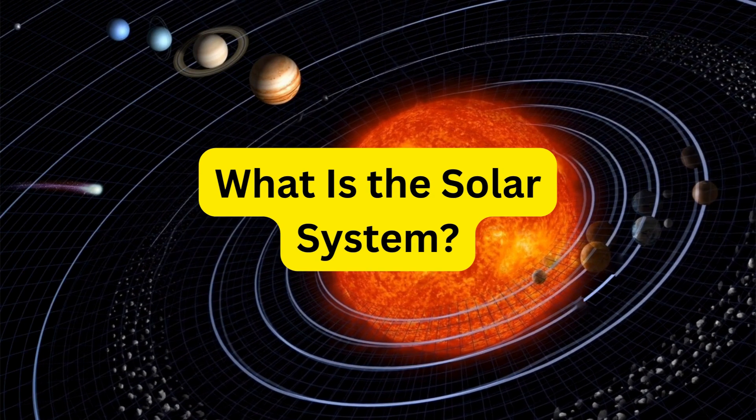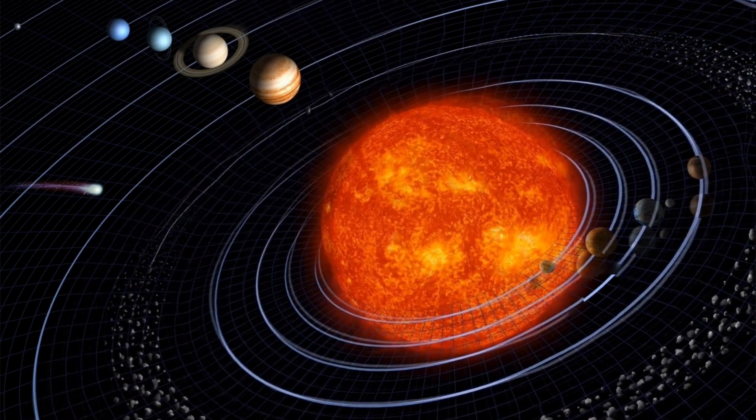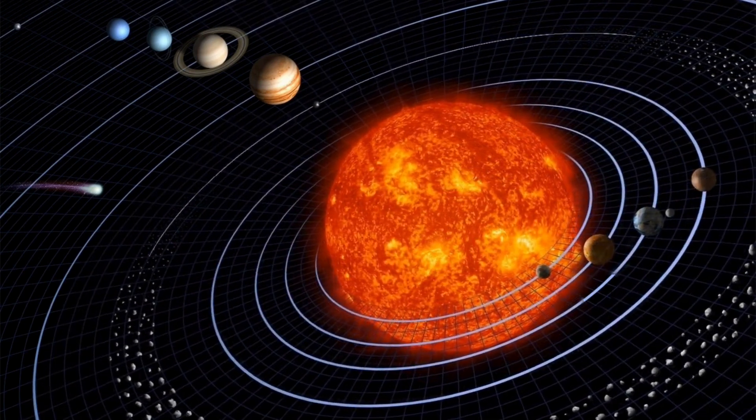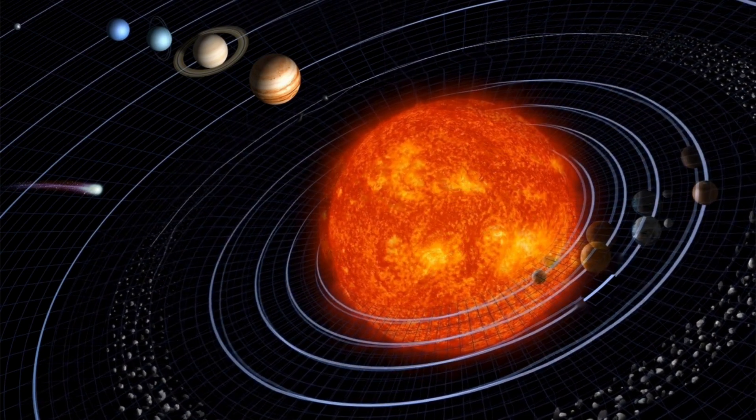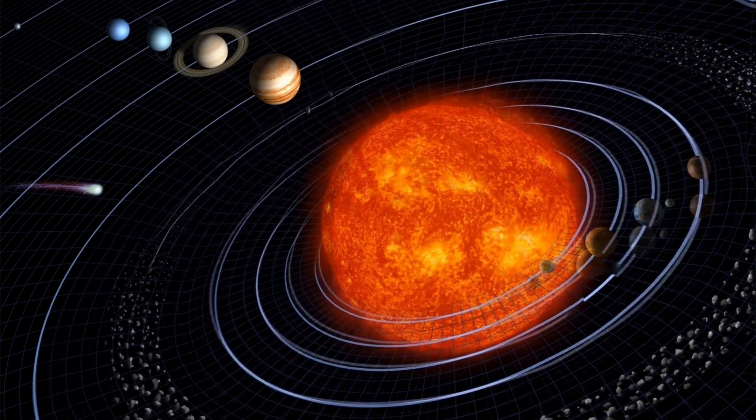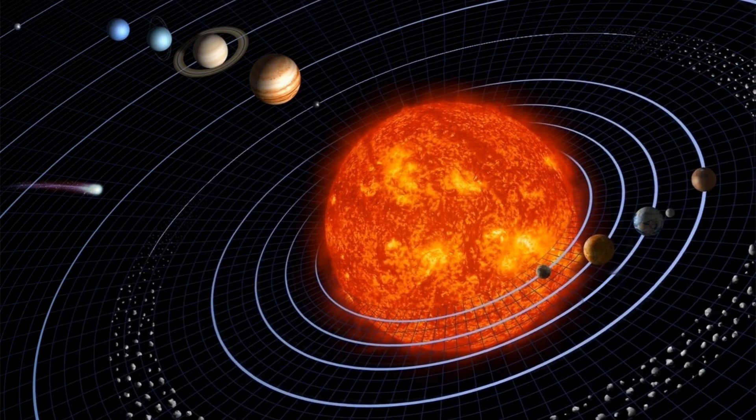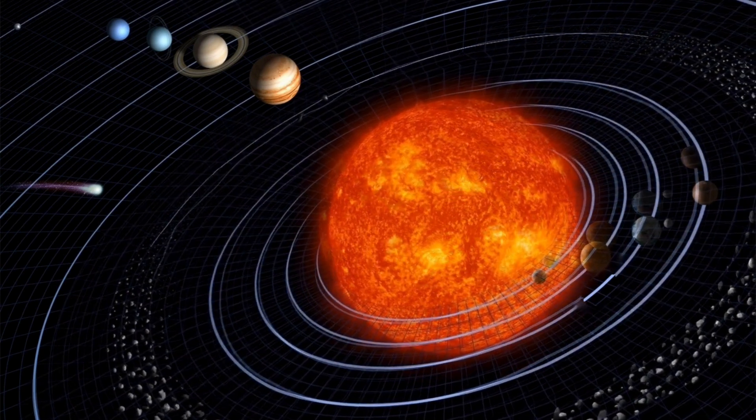What is the solar system? The solar system is like a big family in space. It includes our sun, which is a huge glowing ball of gas, and everything that travels around it. This family has eight planets, including Earth where we live.